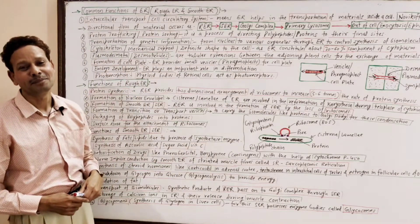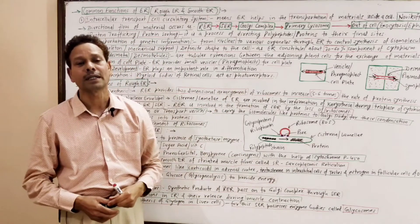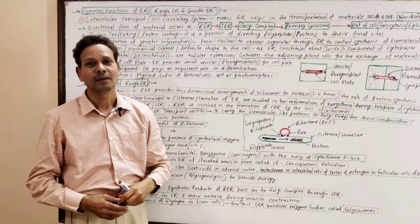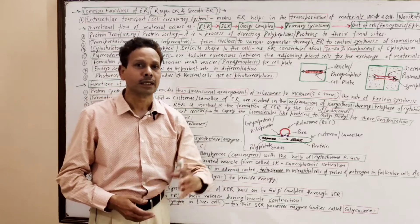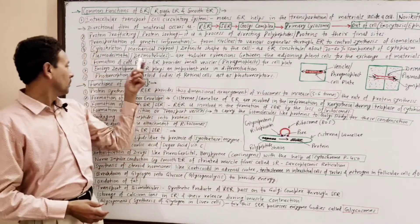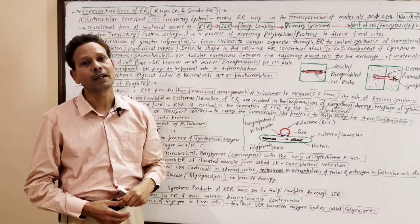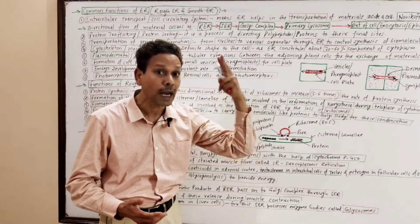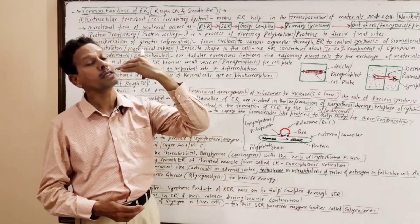Embryo Development: at the time of differentiation of tissues and organs — organogenesis — the endoplasmic reticulum plays an important role. Photoreception: the myeloid bodies, which are modified endoplasmic reticulum present in retinal cells and pigment cells of the eye, act as photoreceptors.